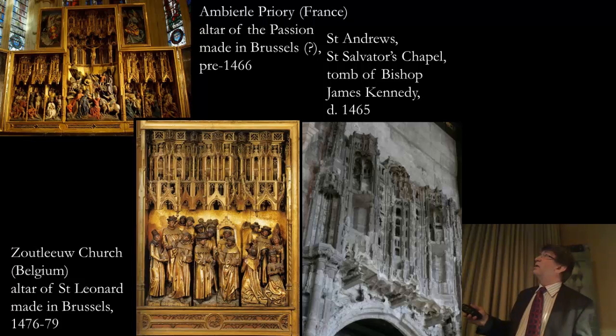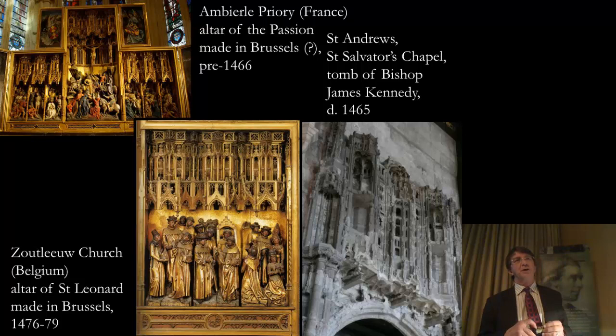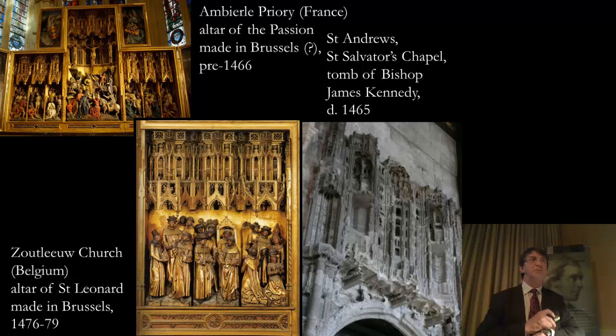Just note by the way that this altarpiece is in the Priory Church of Enbiel. And you remember that was the small Priory Church I showed you when I was trying to explain just why Trinity College Chapel in Edinburgh looked the way that it did. So we do have a whole series of interconnections in this way. Anyway, I'm two minutes late, but we'll stop there and see those of you who can stay the course for the last talk in half an hour's time. Thank you.